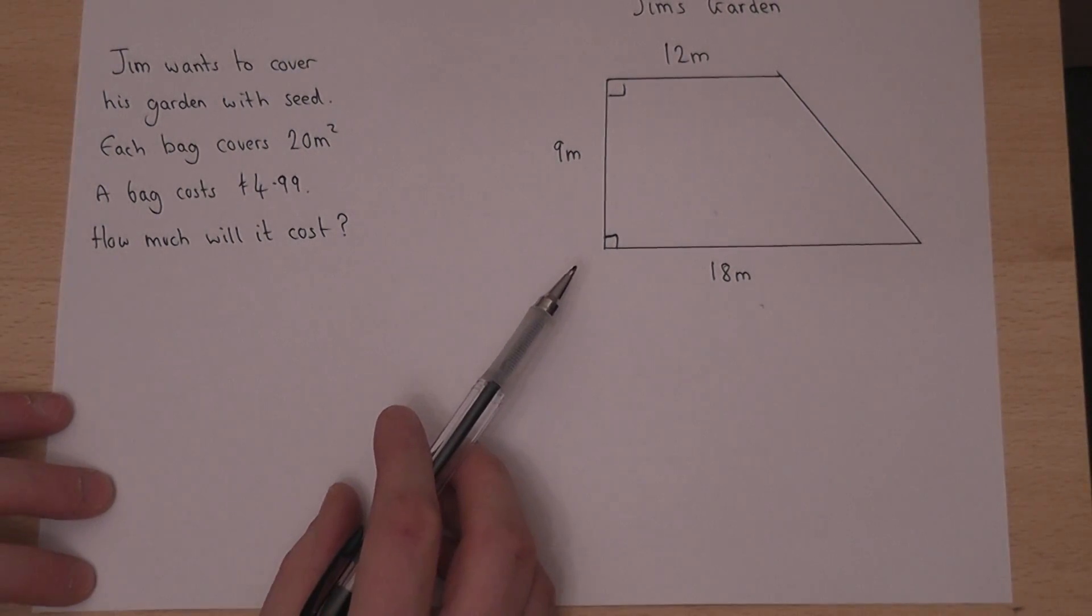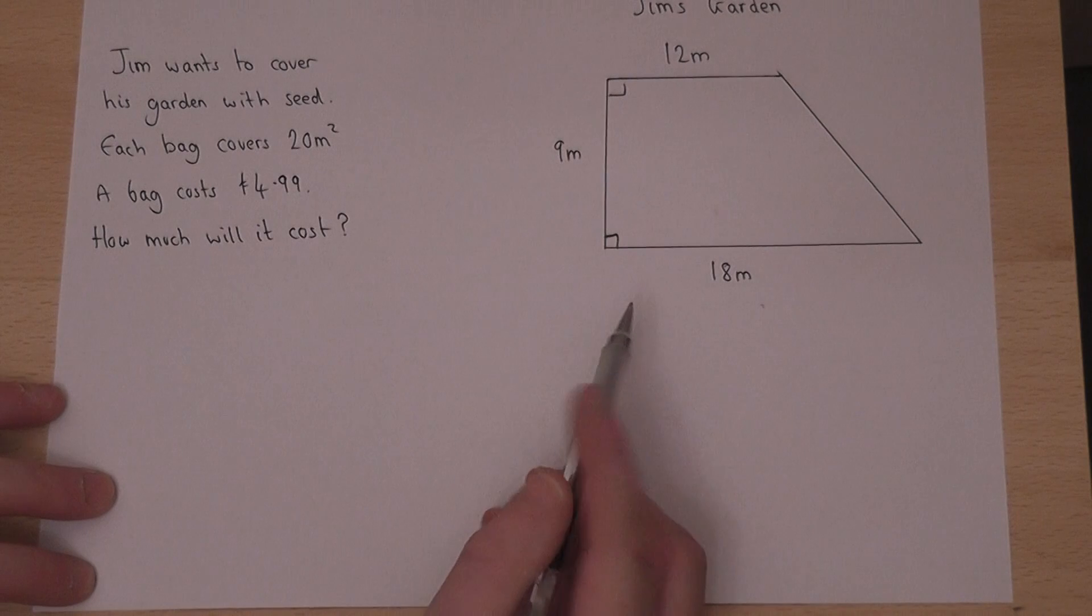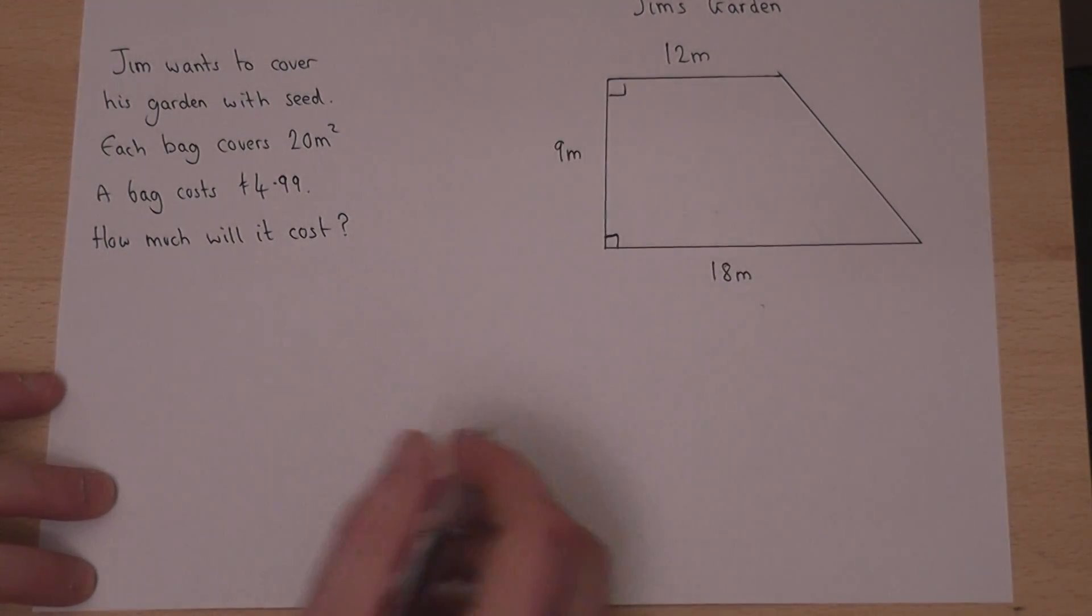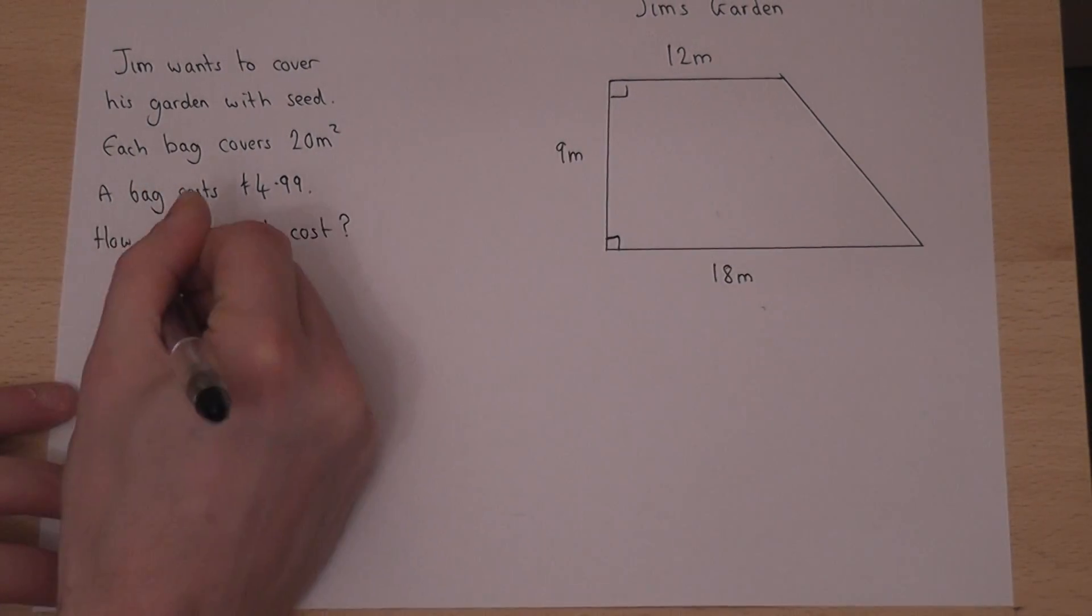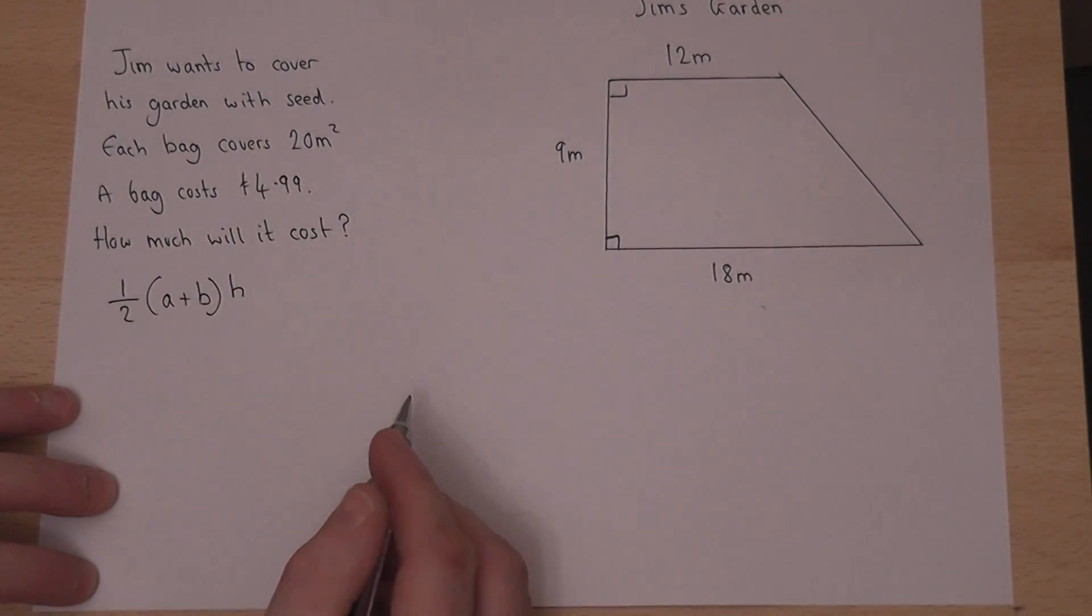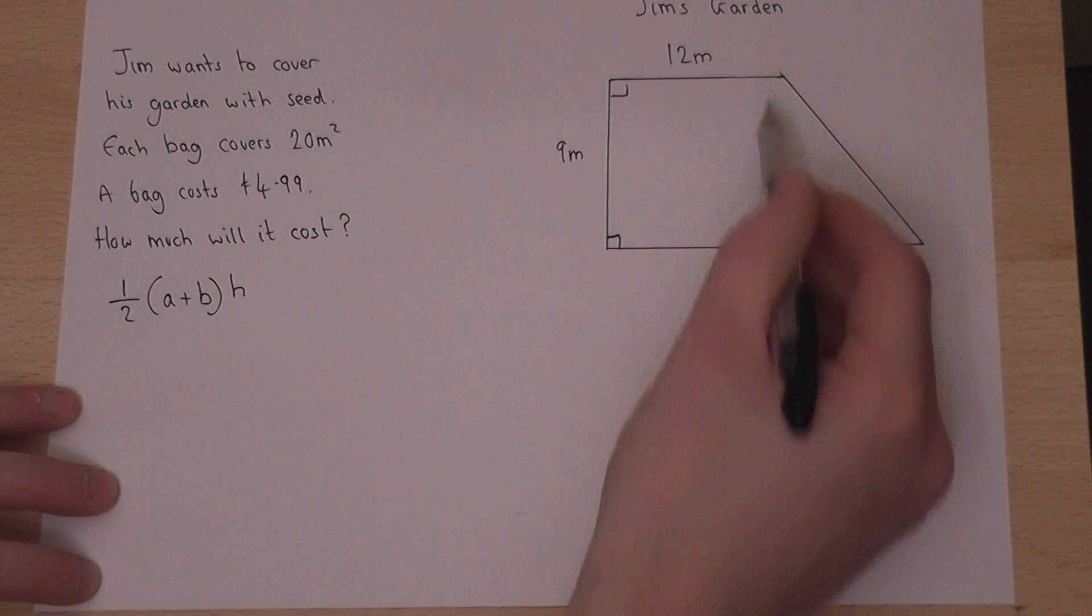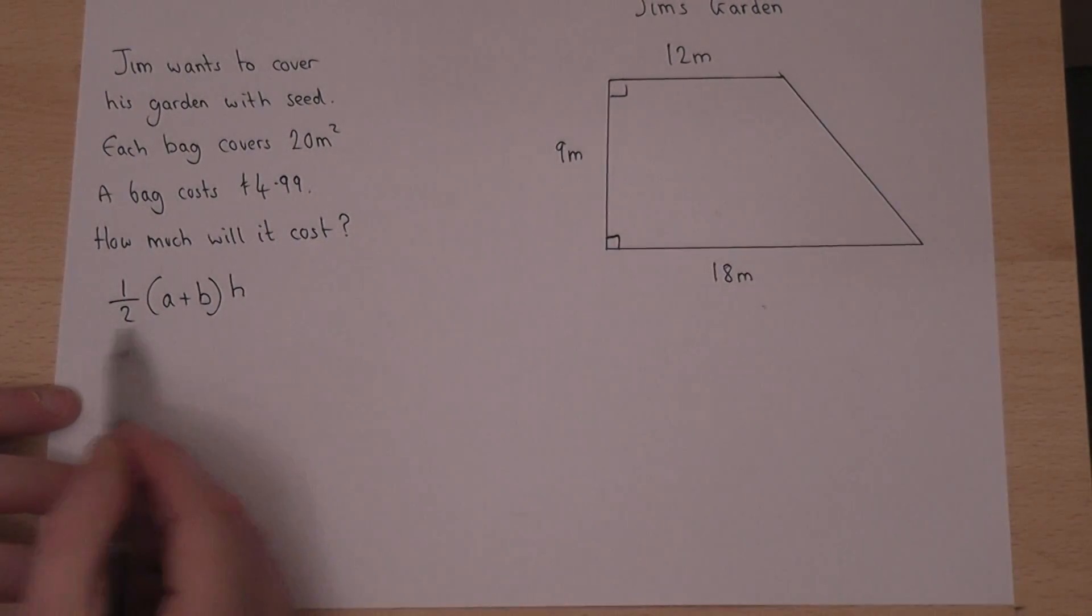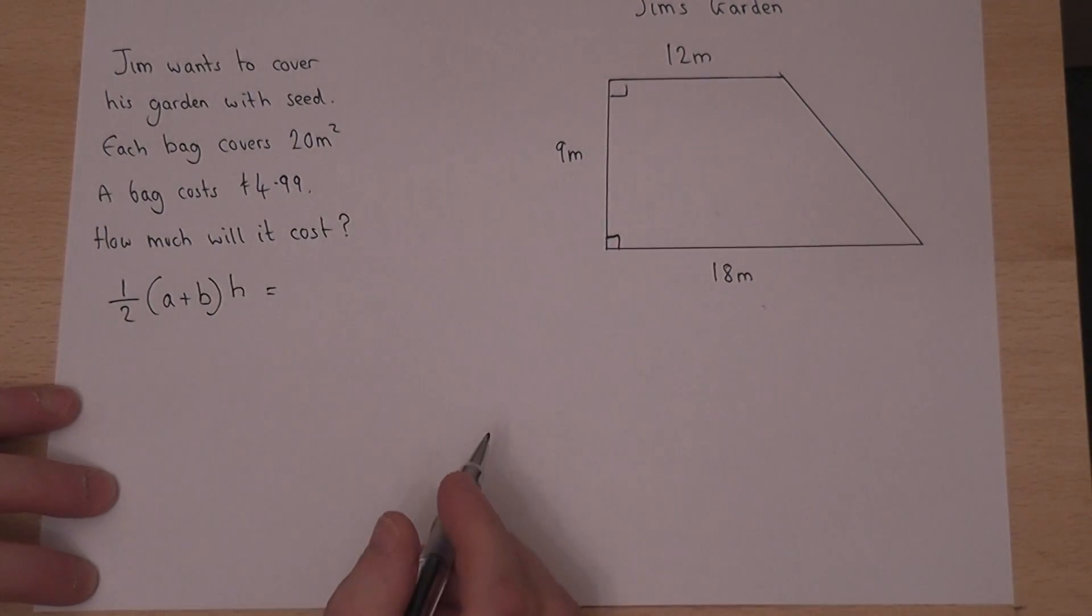We begin by finding the area of his garden. Now it's a trapezium, and in the front of the exam is given a formula to find its area. You could look at it as a rectangle and a triangle, but this formula here will find the area quite quickly.